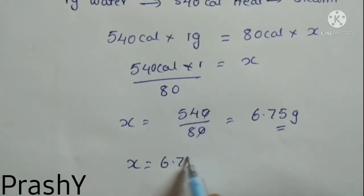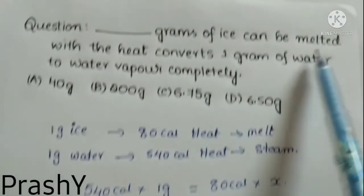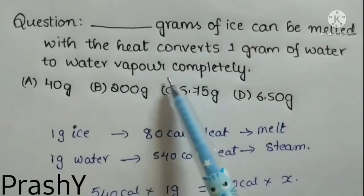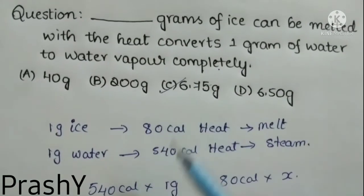So X is equal to 6.75. That means 6.75 grams of ice can be melted with the heat that converts 1 gram of water to water vapor completely. So our option is 6.75, that is C.